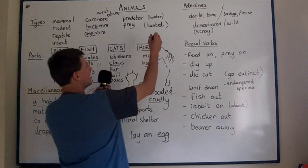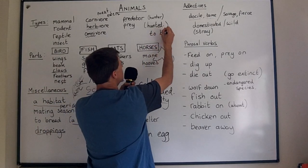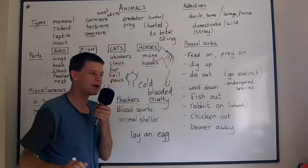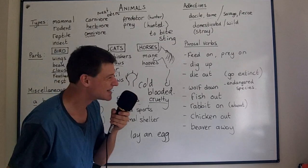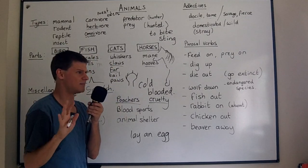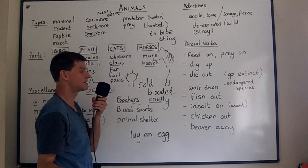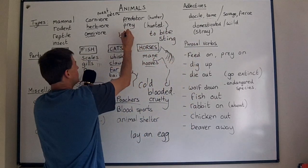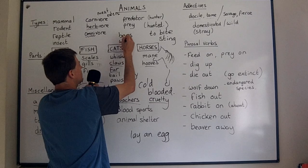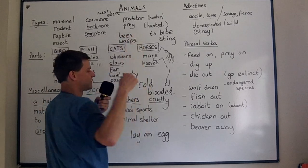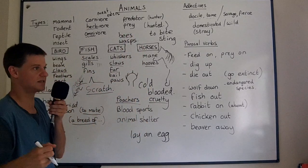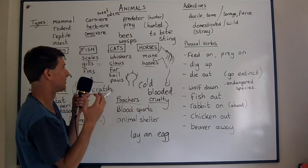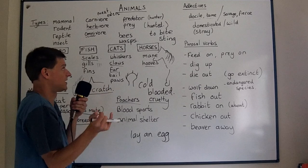Animals can bite you or sting you. We usually use bite if the animal does it with its mouth — even spiders bite, so we say a spider bite. But we say sting for bees and wasps, where they inject a sting under the skin into your bloodstream. So we'd say a bee sting or a wasp sting.